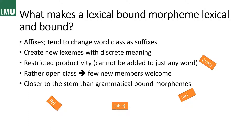Lexical bound morphemes are usually affixes — suffixes or prefixes. If they are suffixes like -ness, -able, -ly, or -er, they tend to change the word class. They don't have to, but they often do. For example, you have 'fit' as an adjective, you add -ness, you get 'fitness,' which is a noun. And by adding these affixes, you create a new lexeme with a discrete meaning.